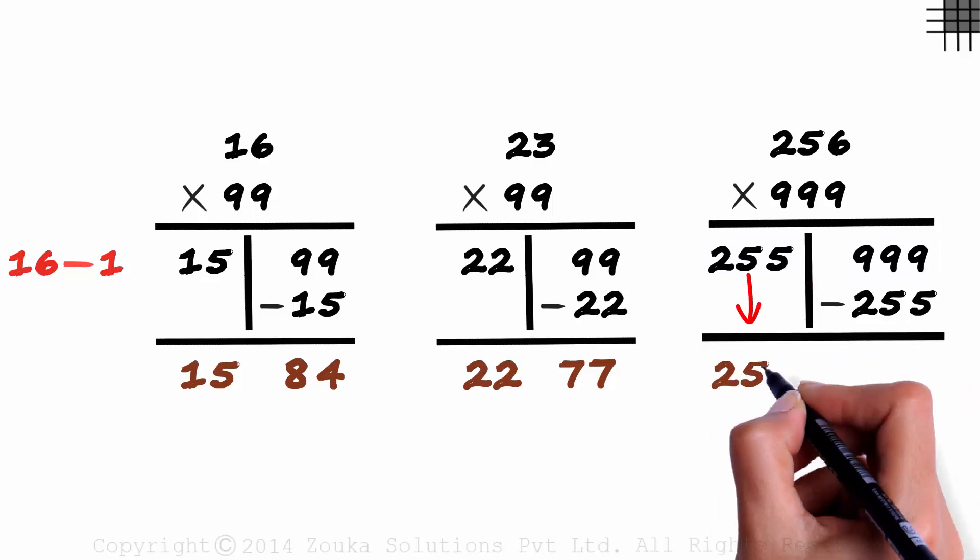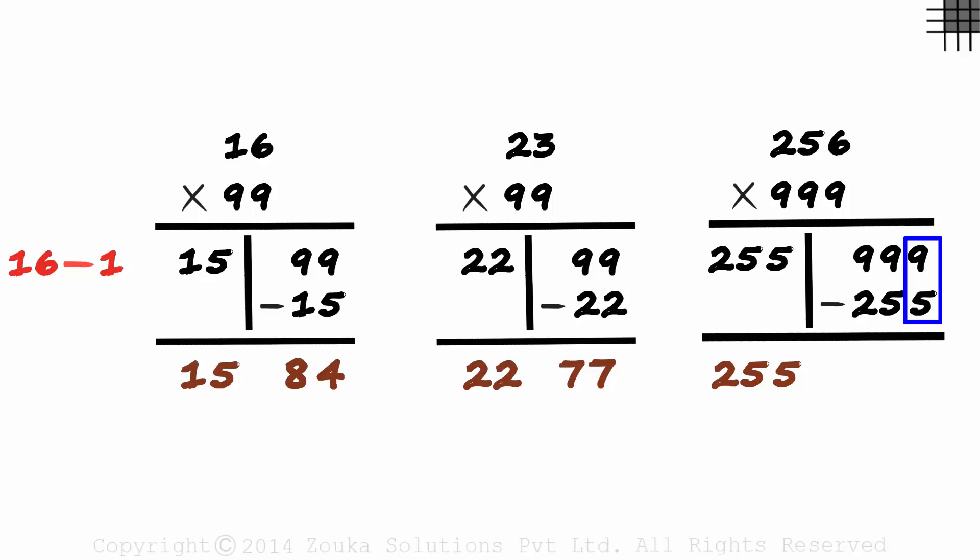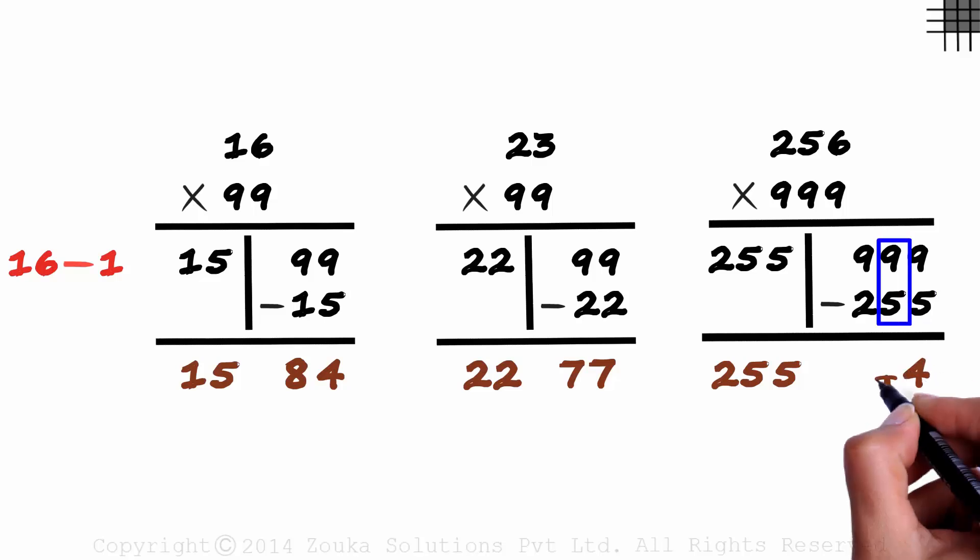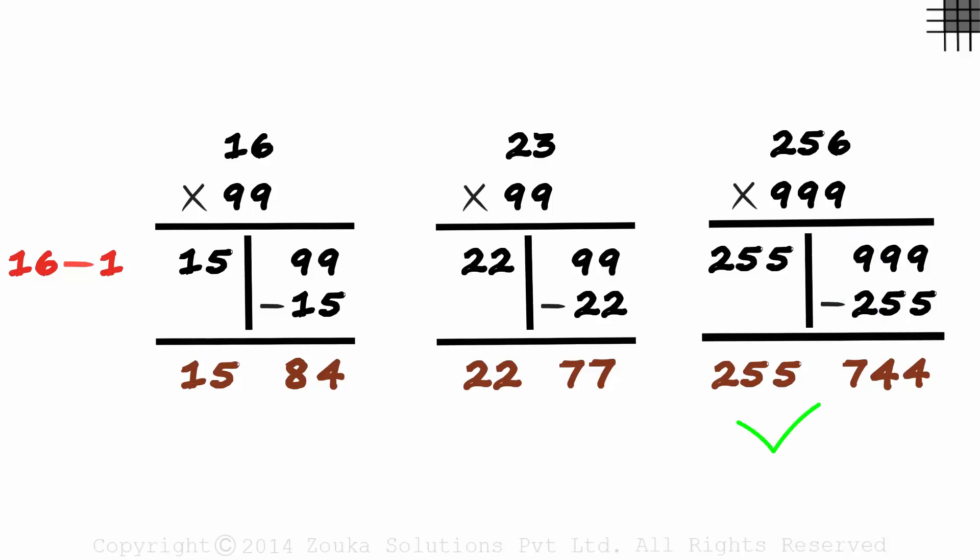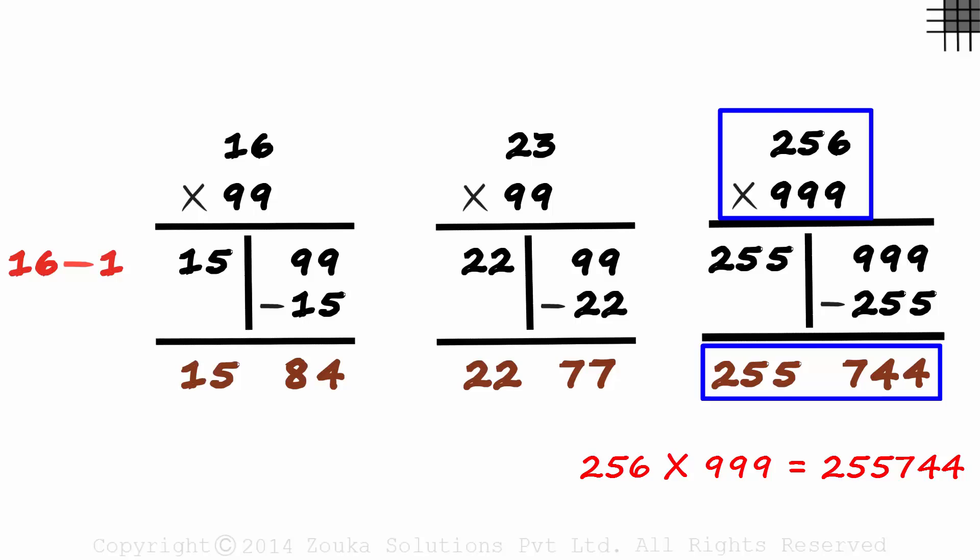Okay, so we get two hundred and fifty-five down. Nine minus five is four. Nine minus five is four again. And nine minus two is seven. That's the correct answer. Two hundred and fifty-six times nine hundred and ninety-nine is equal to two hundred and fifty-five thousand seven hundred and forty-four.